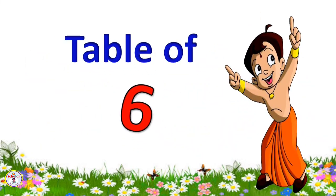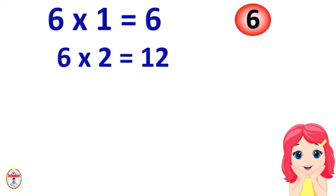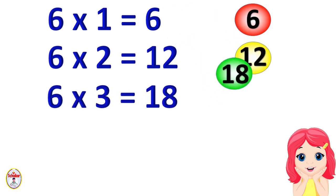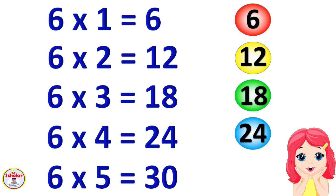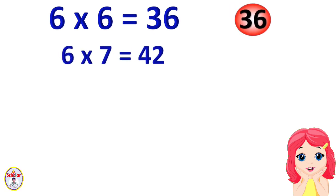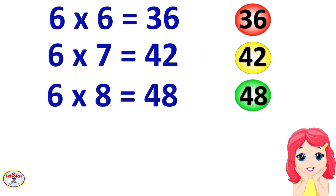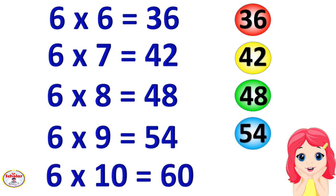Table of 6. 6×1=6, 6×2=12, 6×3=18, 6×4=24, 6×5=30, 6×6=36, 6×7=42, 6×8=48, 6×9=54, 6×10=60.